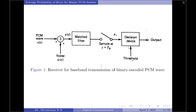We know that for an AWGN channel the optimum receiver is either a matched filter or a correlator. Here, for our derivation, we will be assuming a matched filter as shown in diagram 1. The input signal S of T and noise W of T are fed to the matched filter. The output of the matched filter is sampled at T equals Tb to create a sample X1, which is then fed to the decision device. Depending on whether X1 is greater than or less than the threshold, a corresponding decision is made. If X1 equals the threshold value, the decision is made by flipping a fair coin.